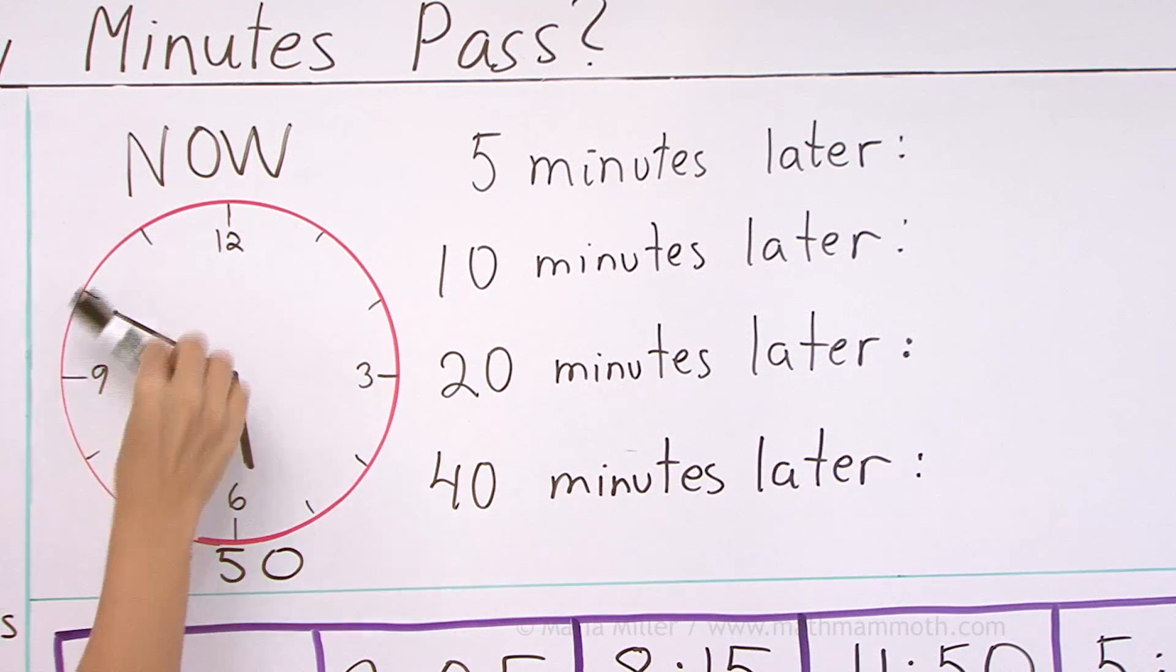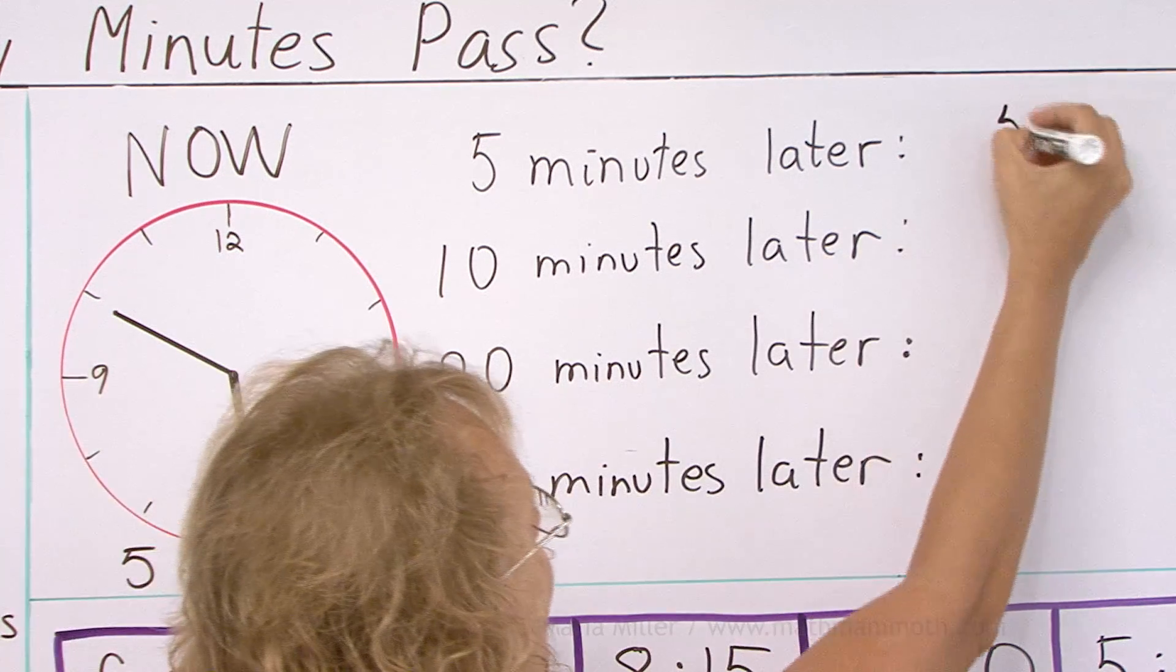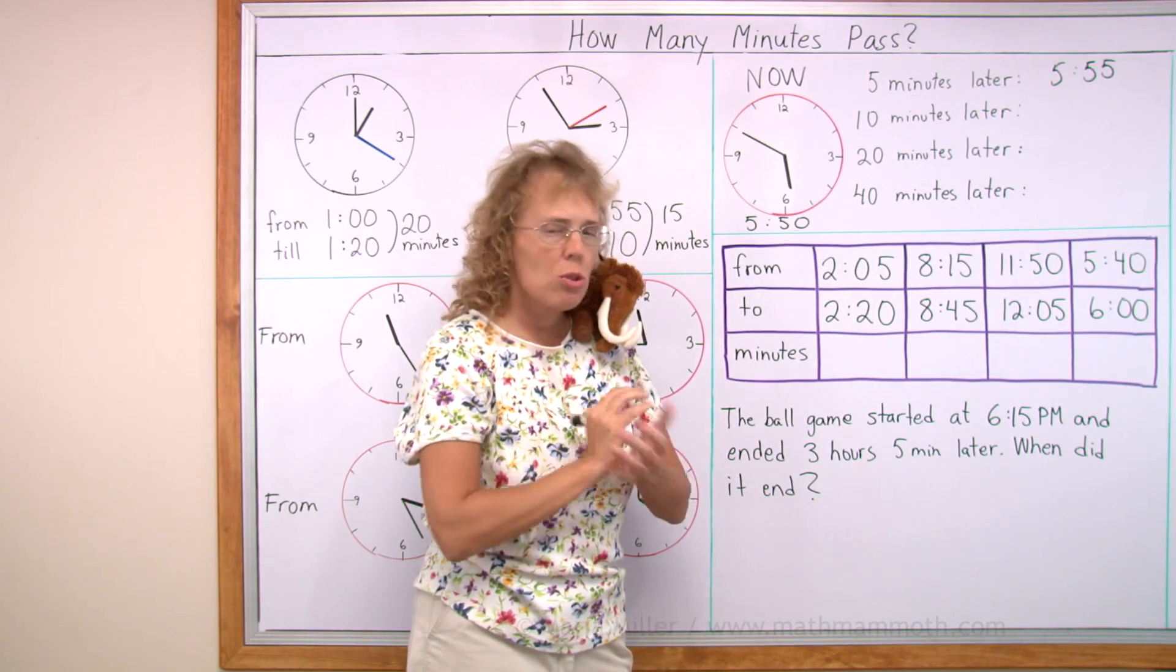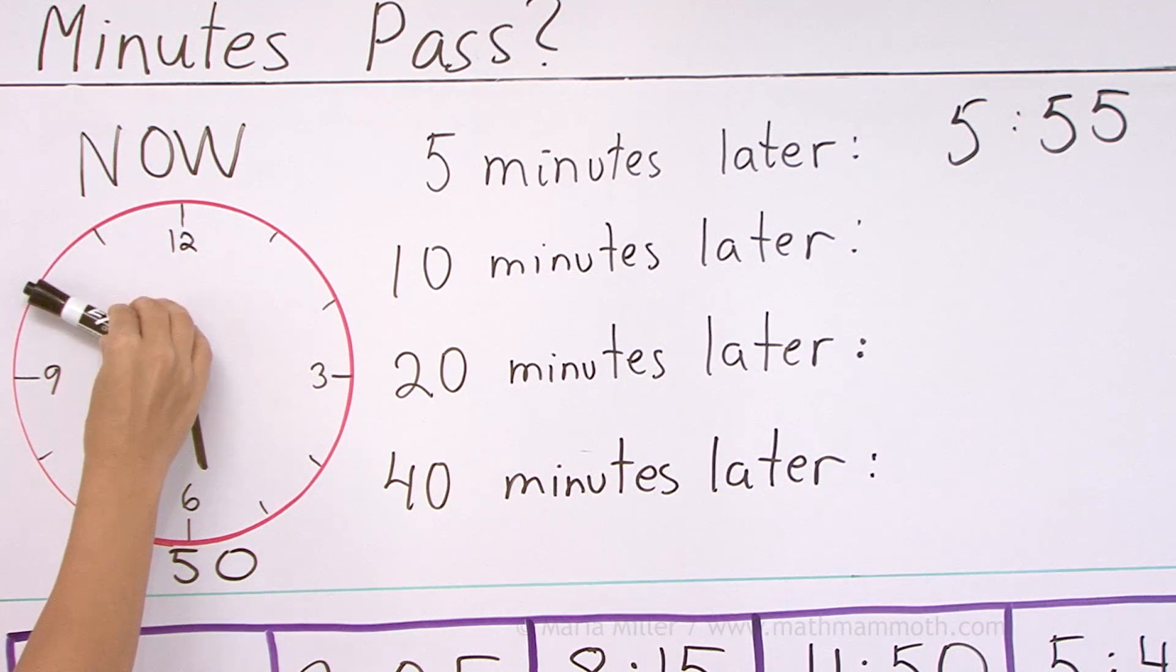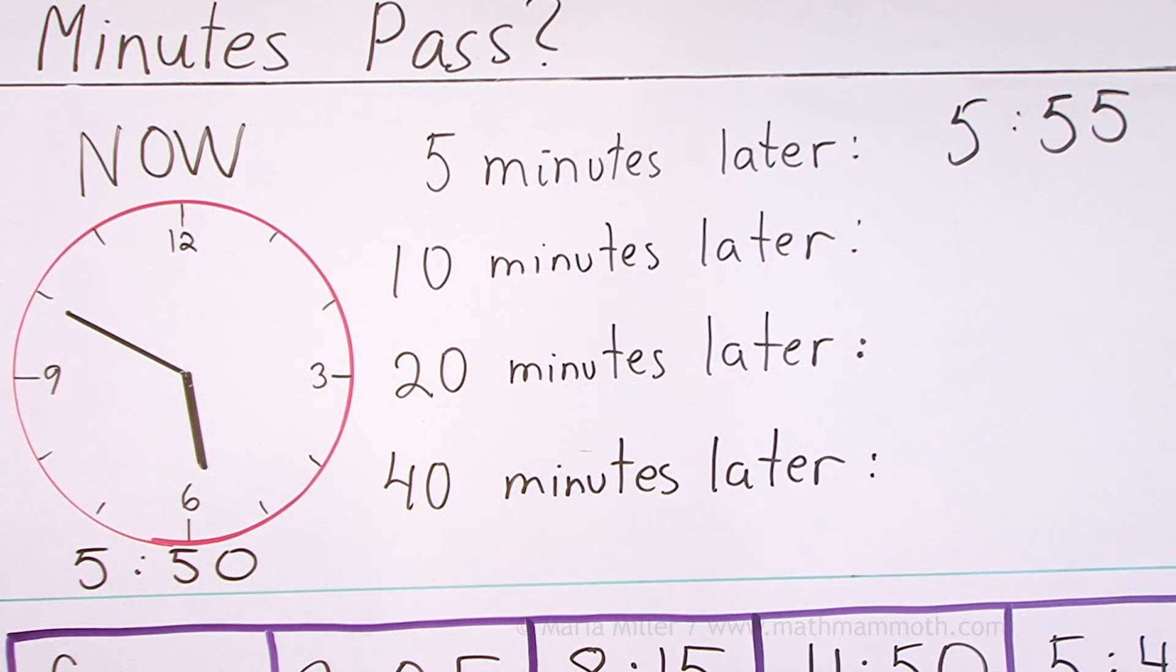So this is 5:50. And 5 minutes later, the minute hand moves here. We can just add to the minutes. 50 plus 5 would be 55, so we have 5:55. 10 minutes later, can you tell me what time it will be in 10 minutes? The minute hand is here and it moves 10 minutes in order of 5 and 5. And it will be 6 o'clock, right?